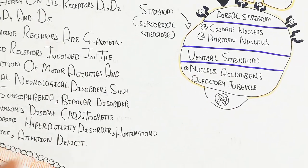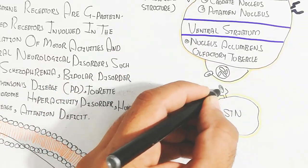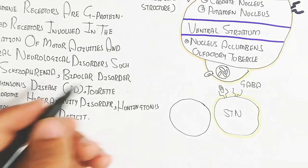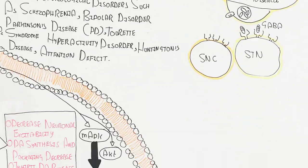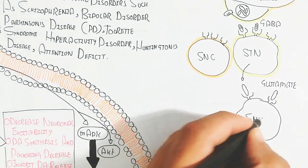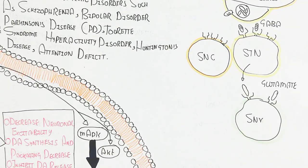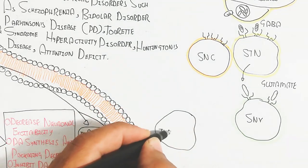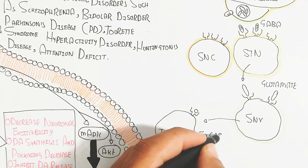This striatum collectively, after processing that stimulus, will trigger the substantia nigra through GABA to inhibit. So the glutamate will not be able to release to the substantia nigra reticulata. In this way, it inhibits this.